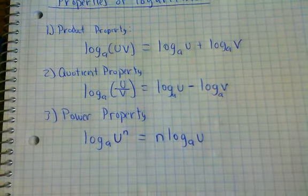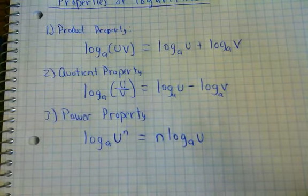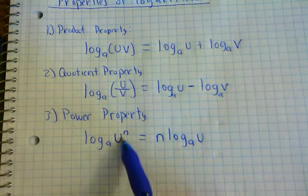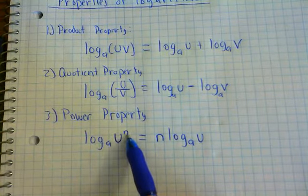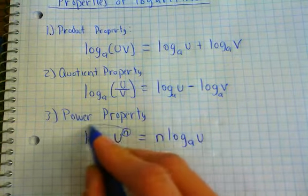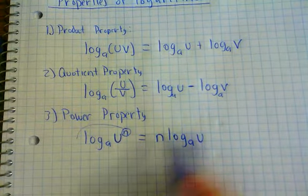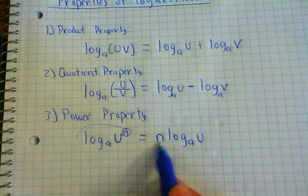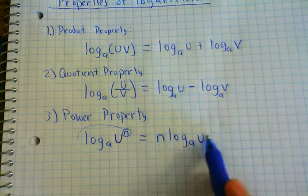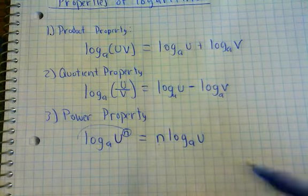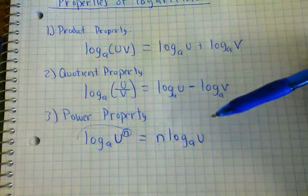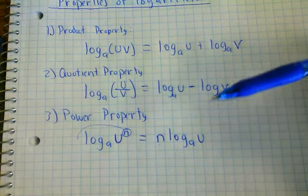Lastly, we have the power property. The power property: you have a logarithm of some base, and whatever you're taking the logarithm of has a power. The power property allows you to take this power and move it to the front — so it becomes n times the logarithm base A of u, now without the power. These three properties are going to help us in our next lesson, which is solving equations.